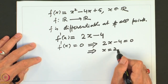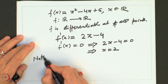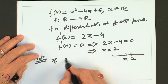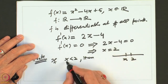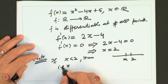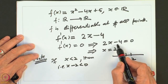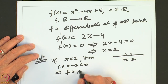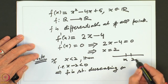Setting f'(x) = 0 gives 2x - 4 = 0, so x = 2. Thus x = 2 is a possible point where the function can have a local maxima or minima. If x < 2, then x - 2 < 0, so the derivative is negative, which implies f is strictly decreasing on (-∞, 2).